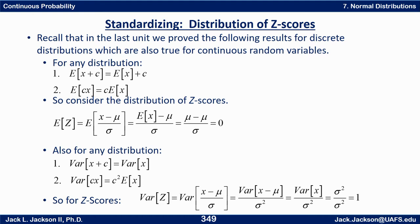Now also for any distribution, the variance of x plus a constant is the same as the variance of x — so shifting a distribution sideways has no effect on its variability. But if we multiply a constant c times x, we end up multiplying the variance by c squared and the standard deviation by the absolute value of c. So for z-scores, the variance of z is the variance of x minus mu over sigma. Applying the second rule first, that's the variance of the top multiplied by the constant one over sigma squared. So that's the variance of x minus mu over sigma squared. But the variance of x minus mu is just the variance of x.